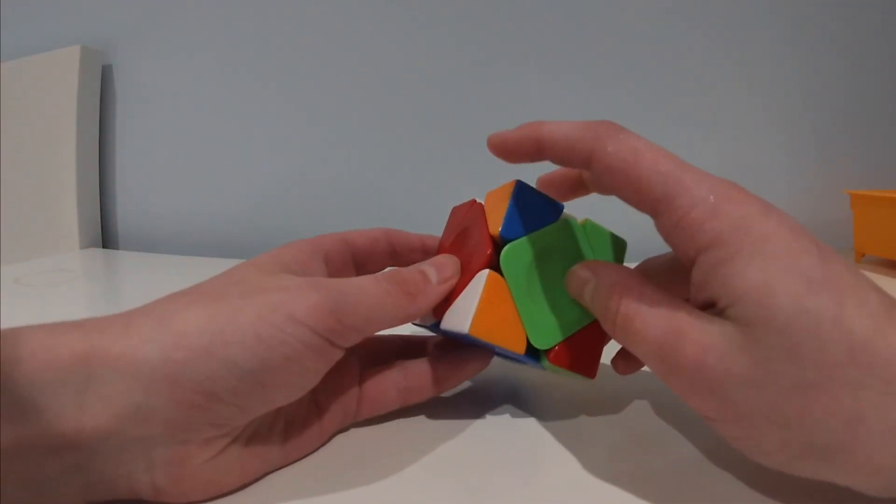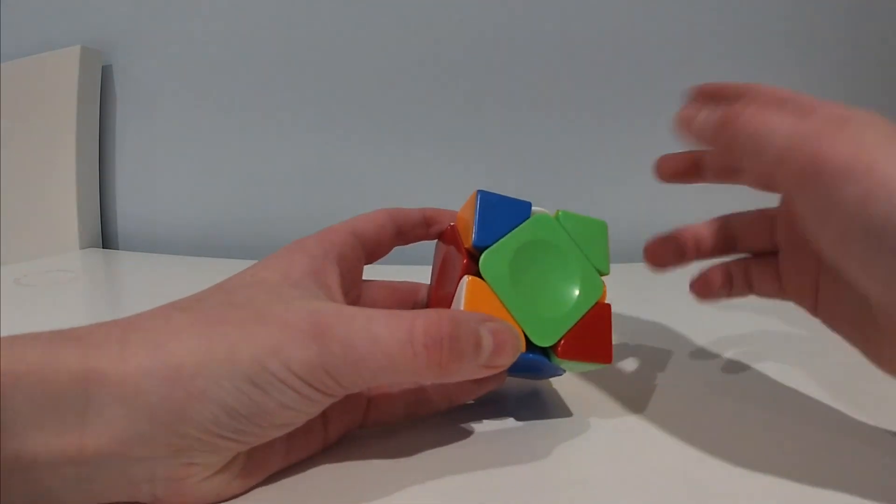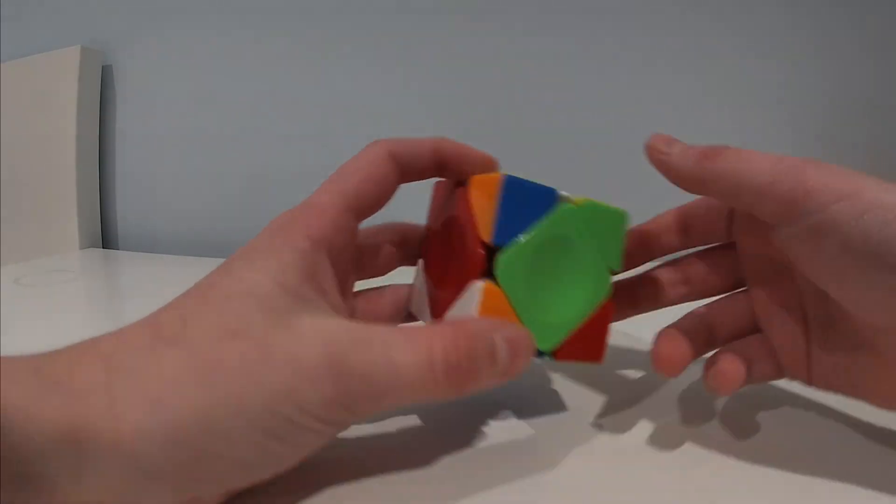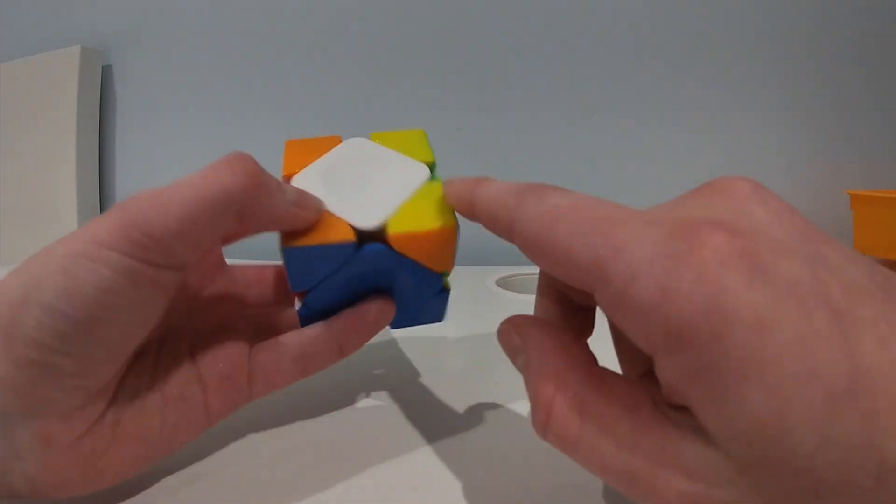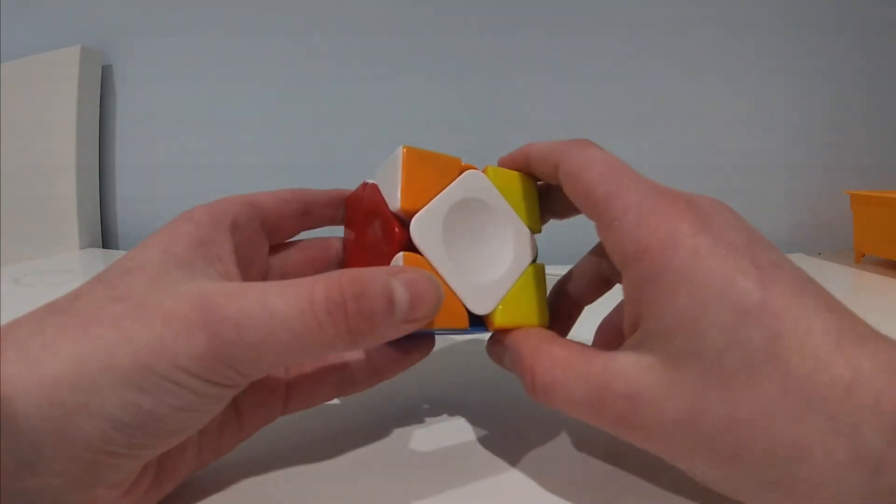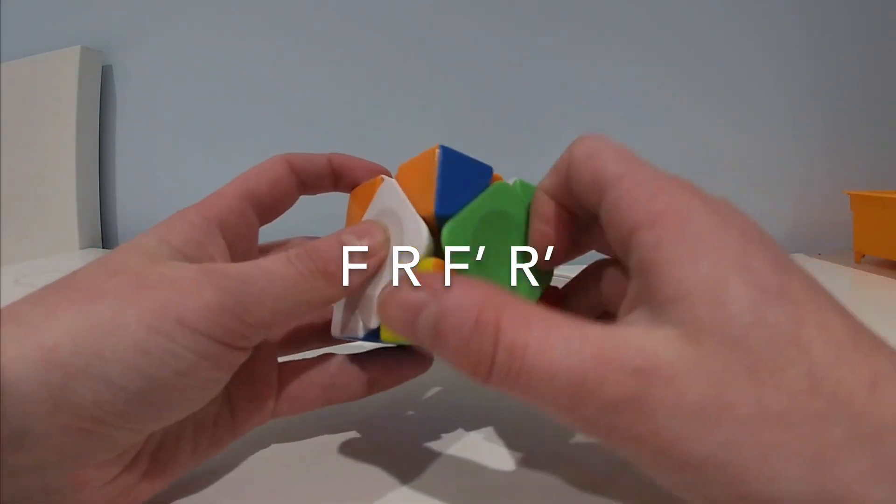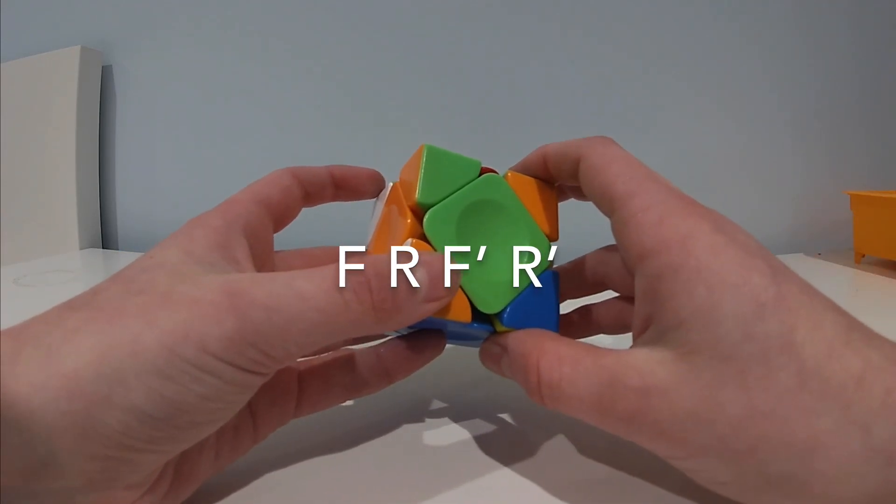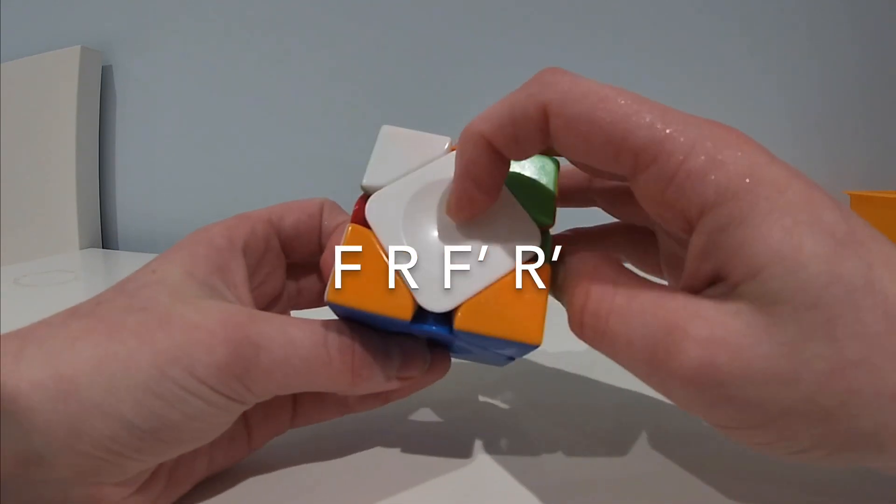Sometimes, you'll have a case where you have to do that algorithm twice. That algorithm or insertion or whatever you want to call it, twice. In that case, you'll know that if it's facing off to the right or the back when you put it down here. So, what you do then is you just do the algorithm, F, R, F prime, R prime, and then you do it again, F, R, F prime, R prime.